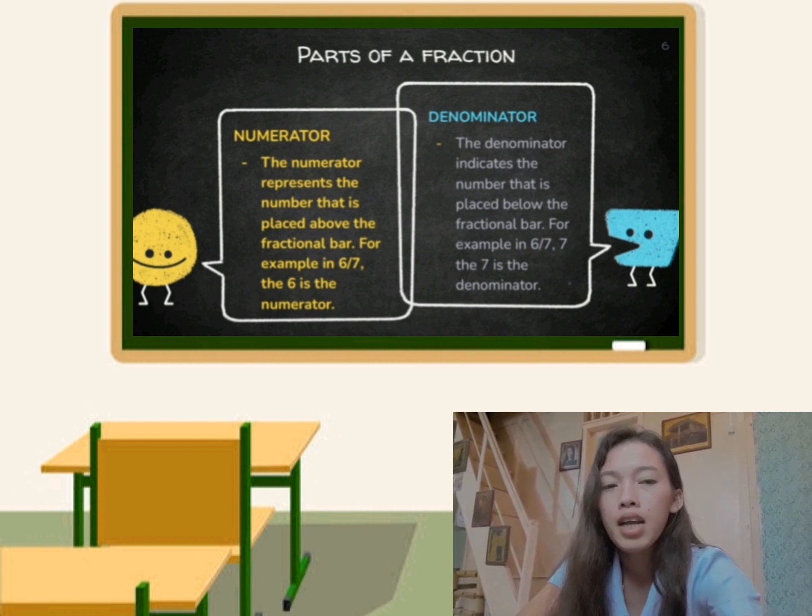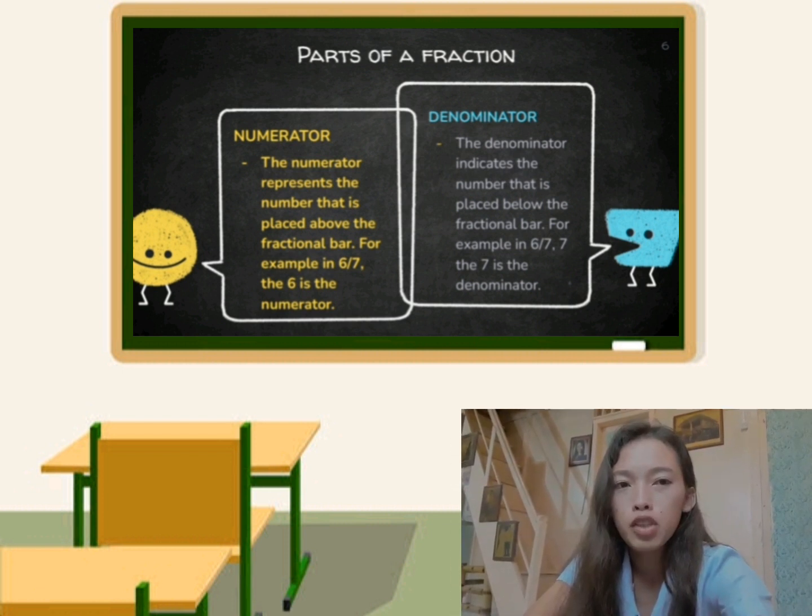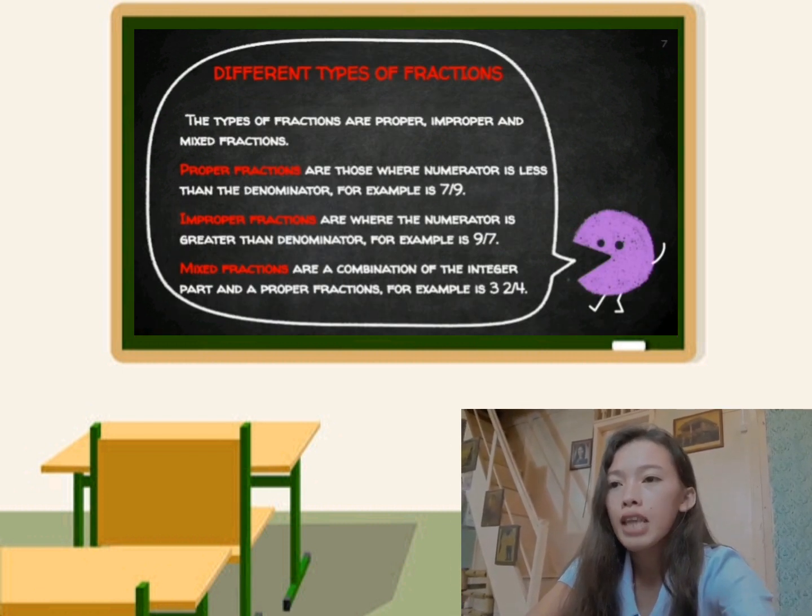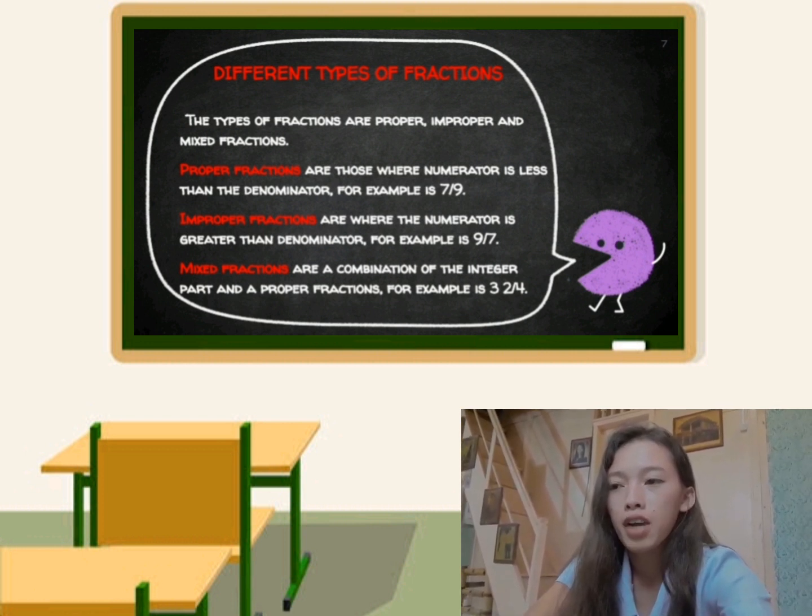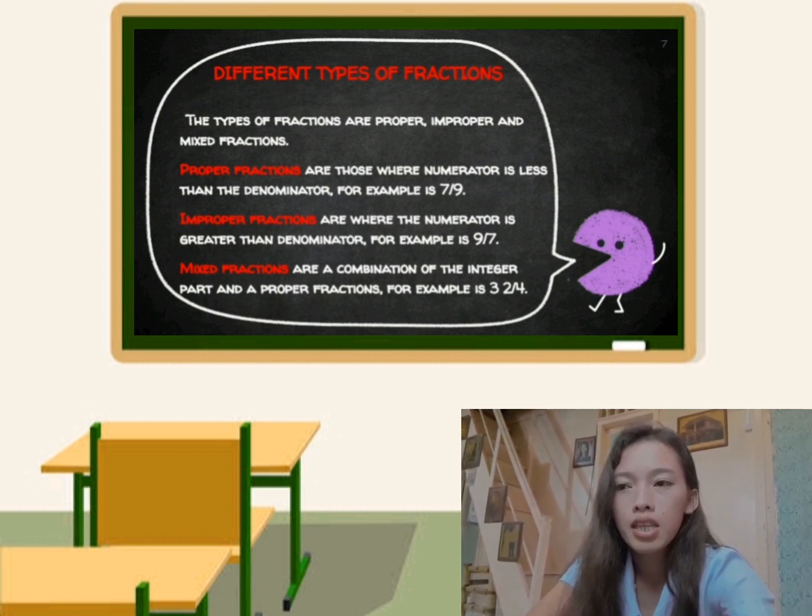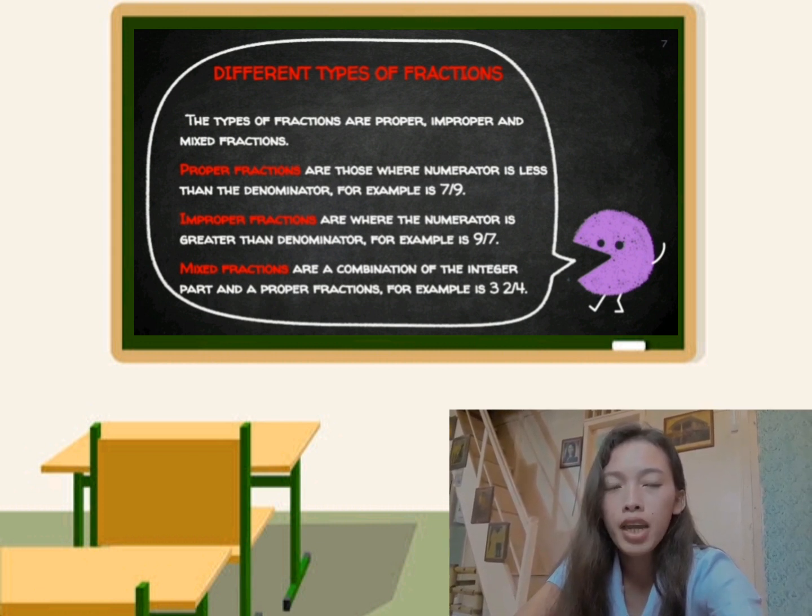The different types of fractions are proper, improper, and mixed fractions. Proper fractions are those where the numerator is less than the denominator. For example, 7 over 9, so 7 is less than 9.